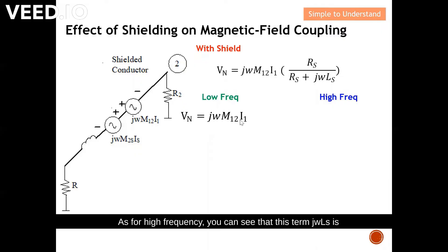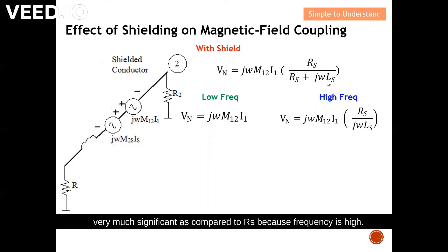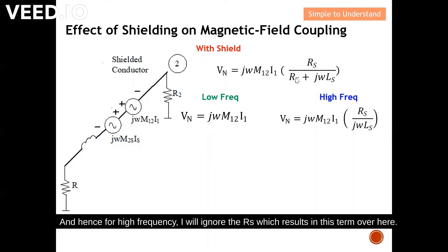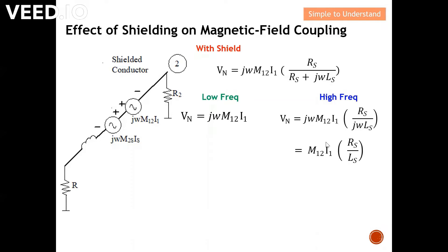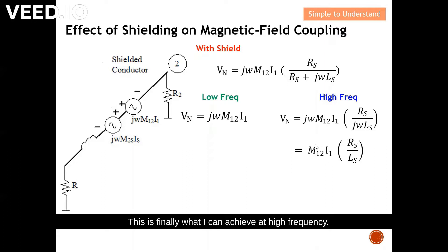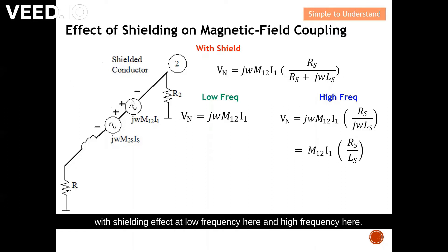At high frequency, the term jωLs is very much significant compared to Rs because frequency is high, so this term is much higher than Rs. Therefore, for high frequency, I ignore Rs, which results in this term here. The j·omega cancels out, and this is finally what I achieve at high frequency — the noise that couples from conductor 1 to conductor 2 with shielding effect.